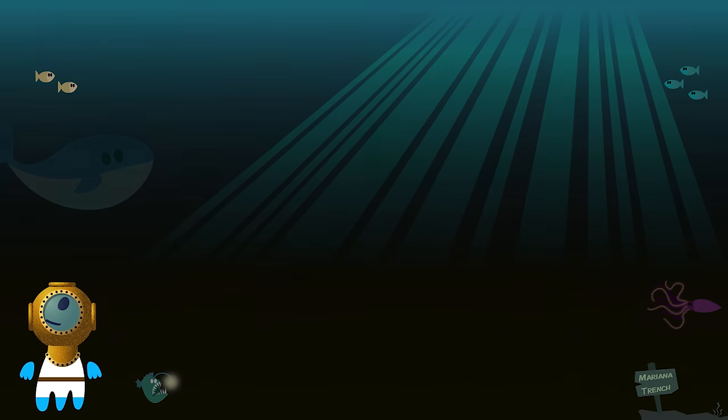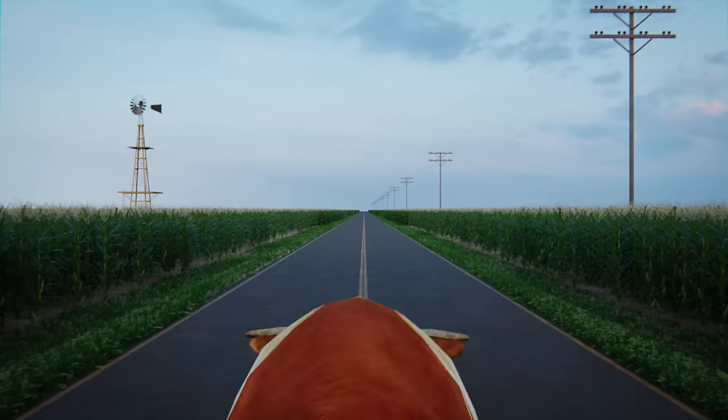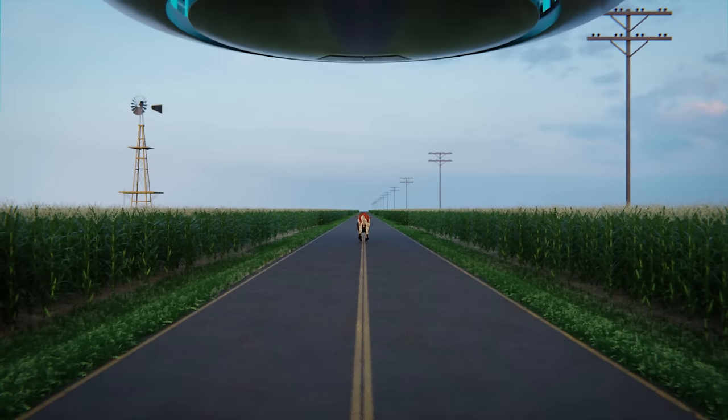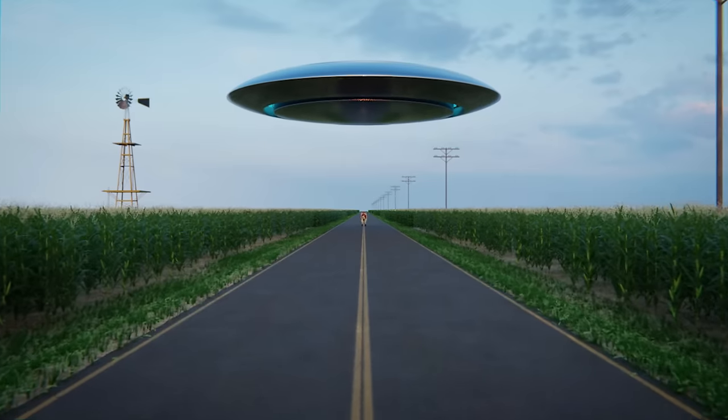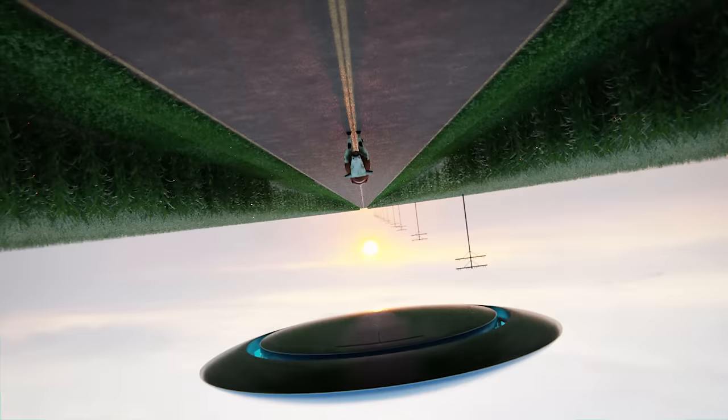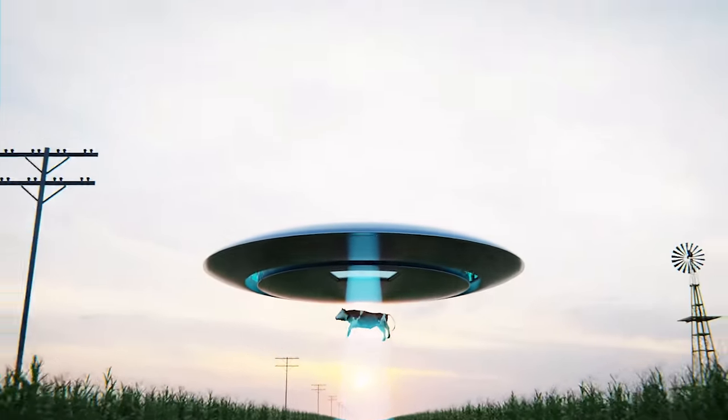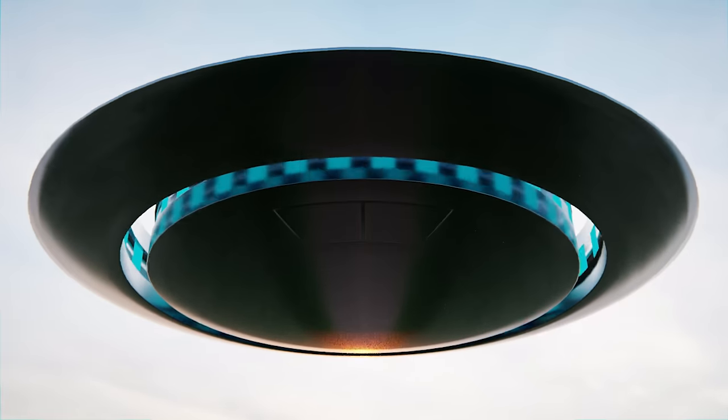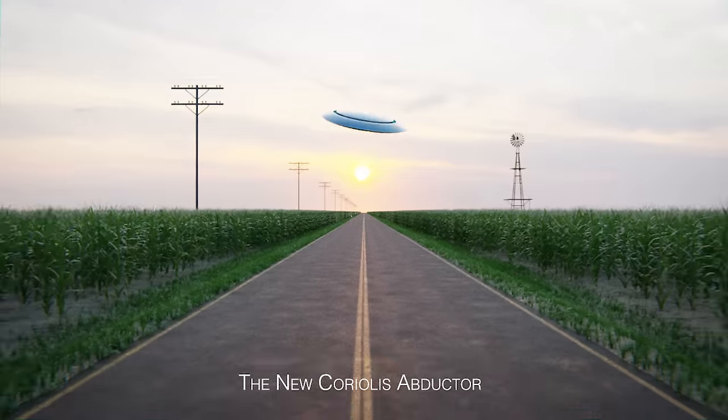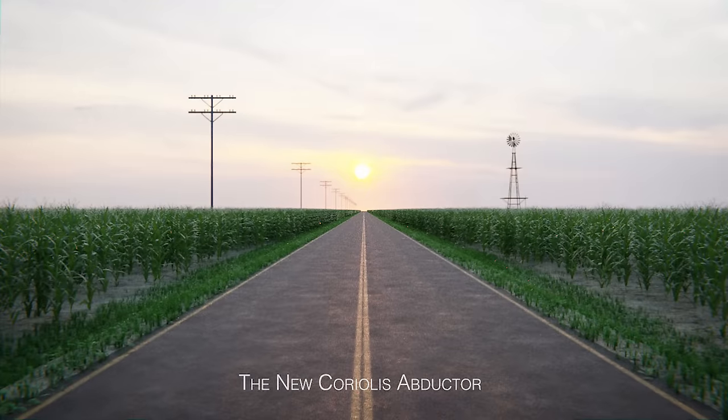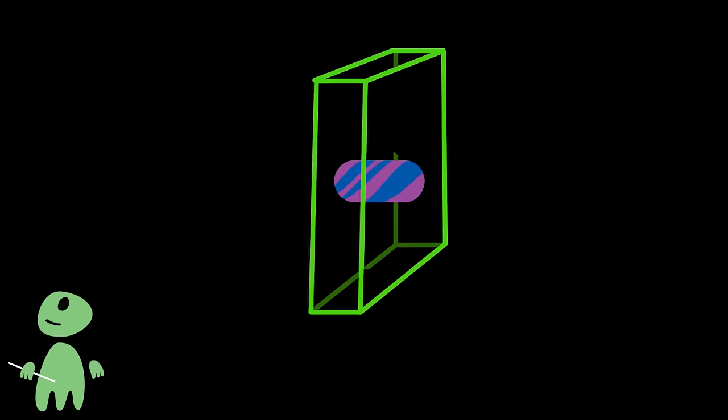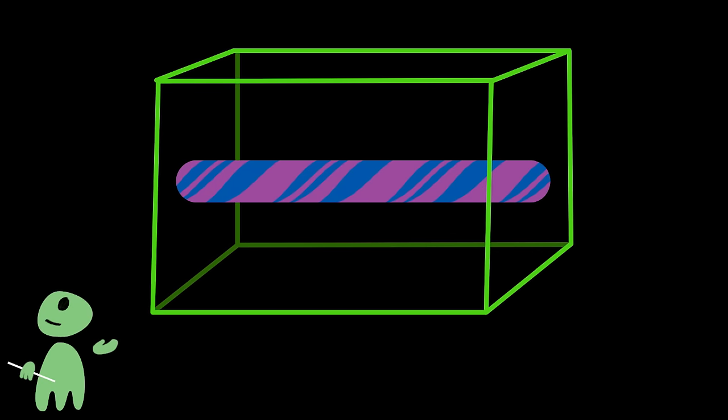Before we discuss how we aliens perceive time, a word from our sponsor, the Coriolis Saucer Company. Let's have a look at how other alien races experience time. Most aliens see time as a mere dimension of what we call the conglomerate, or spacetime, as earthlings would say. Some separate the time axis from space, as earthlings do. But there are other perceptions of time around.